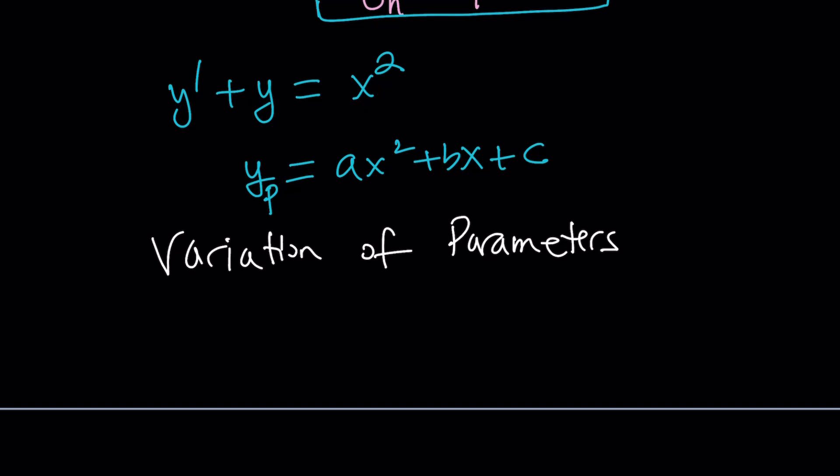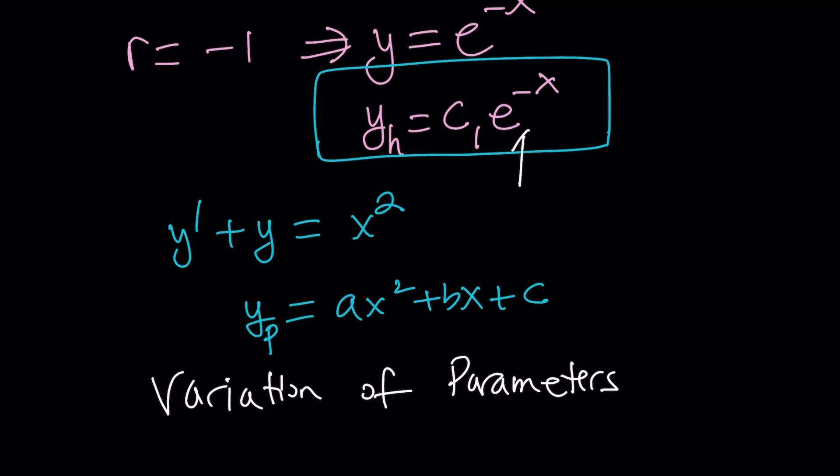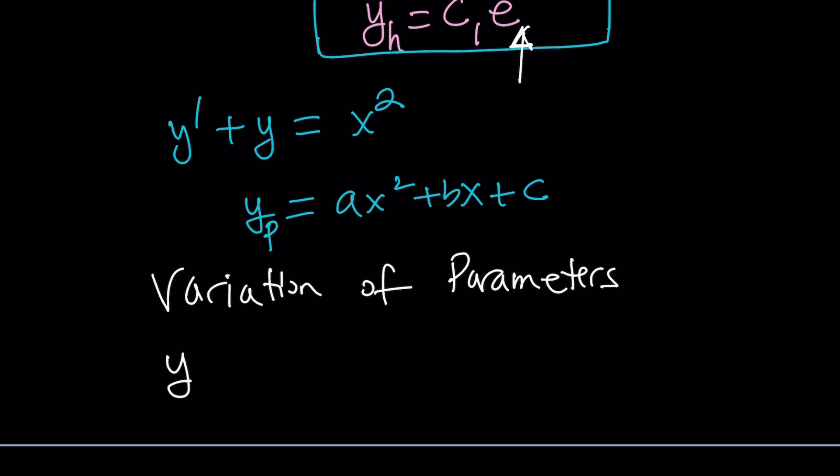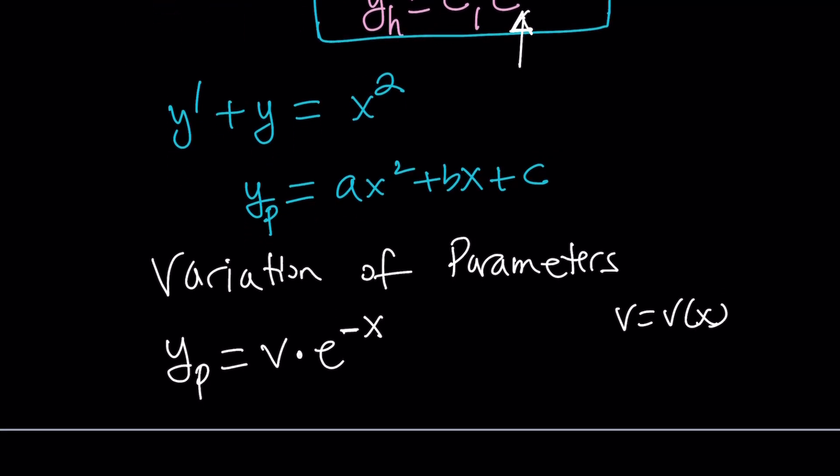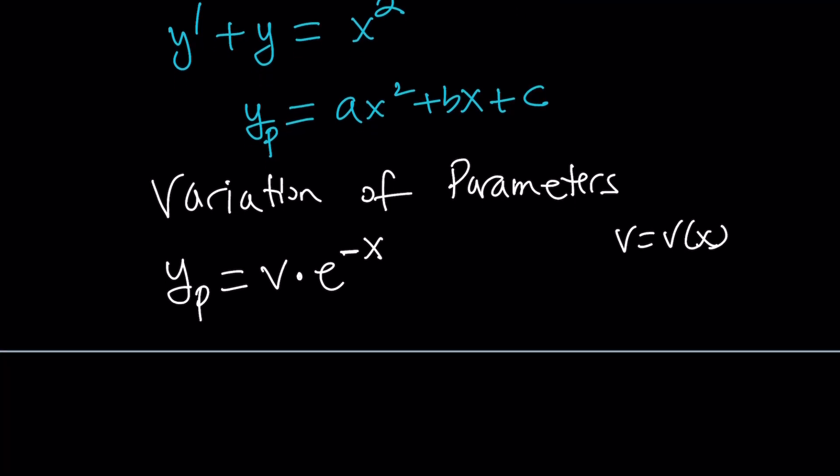So how do we set up our solution? We go and look back at the homogeneous solution, e⁻ˣ. Notice that it's accompanied by a constant, c₁. So here's a very easy, quick way to come up with the particular solution. Instead of the constant, you just use a function of x, and let's just call that v. So v is a function of x. And instead of multiplying e⁻ˣ by a constant, I'm going to multiply it by a function, a function such that when I plug it in, it's going to satisfy my equation. Hopefully that function will be easily found. So this is my y.